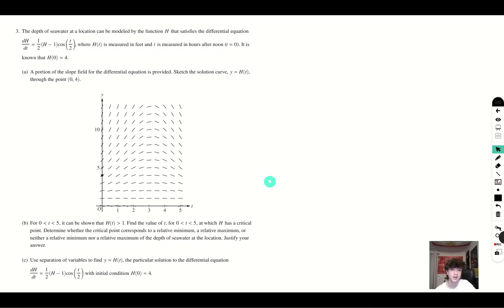The depths of seawater at a location can be modeled by the function h that satisfies the differential equation dh dt is equal to one half h minus one cosine t over two, where h of t is measured in feet and t is measured in hours after noon. It is known that h of zero is equal to four.